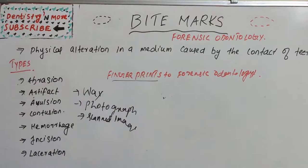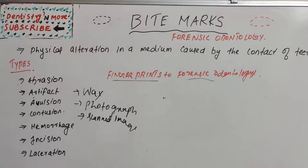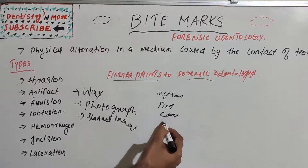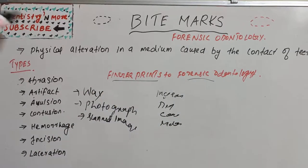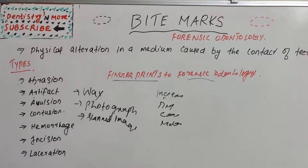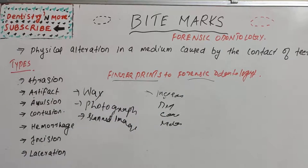Bite marks are like fingerprints to forensic odontologists. Teeth may be considered as tools leaving marks on skin, food, wax, etc. There are class characteristics to be considered, such as which type of tooth inflicted the bite — incisors, premolars, canines, or molars. Each group of teeth leaves a different type of mark on the object or tissue. The biting surface of individual groups of teeth relates to their function: teeth that incise, tear, or grind.